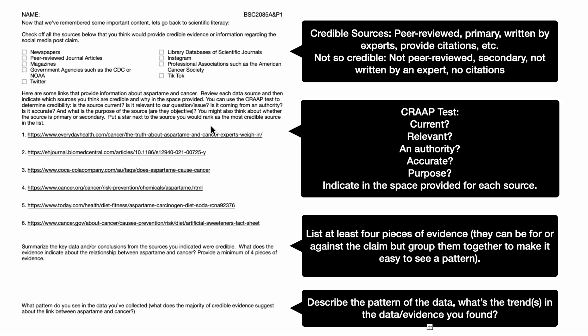You're going to indicate which of these sources passes the CRAP test and is credible, then identify why by noting these characteristics in the space provided. From the credible sources, you are going to pull at least four pieces of evidence to address the claim made at the start of the project. Those pieces of evidence can be for or against the claim, but group them together — put all the ones that support it together and all the ones that don't support it together. That makes it easier to see if there's any pattern in the evidence. Then describe the pattern of the data in a couple of sentences.